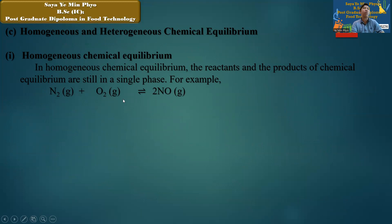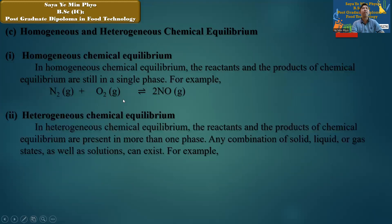Homogeneous equilibrium is where reactants and products are in the same phase. Heterogeneous equilibrium is where reactants and products are present in more than one phase — any combination of solid, liquid, or gas may be involved.